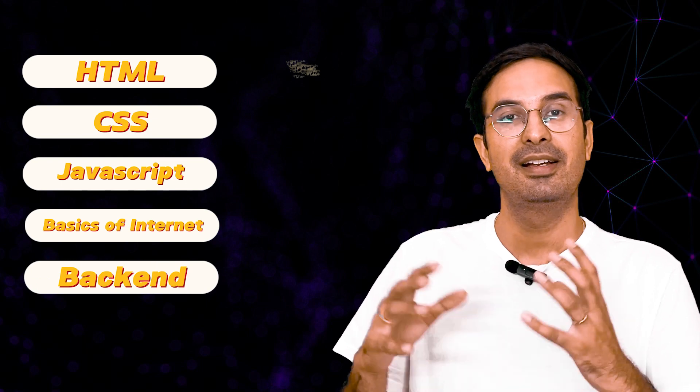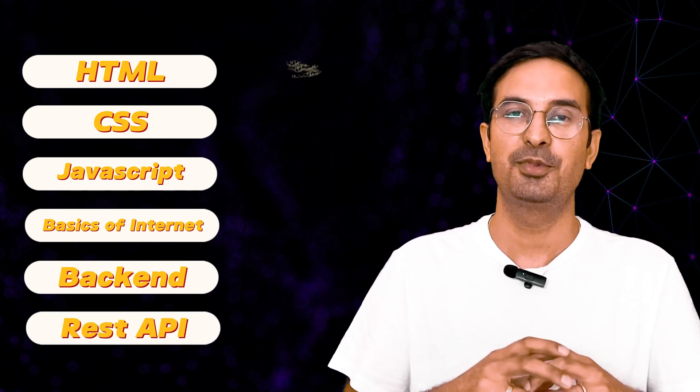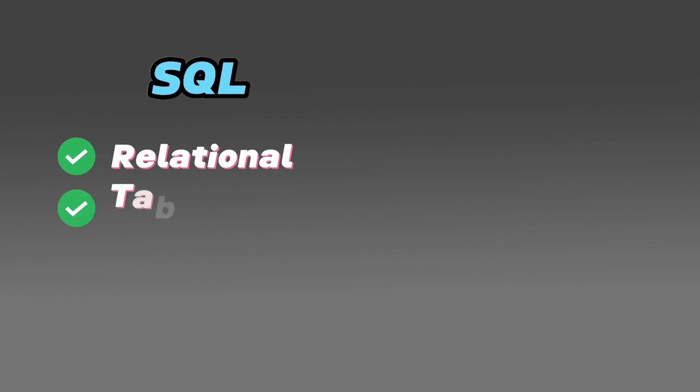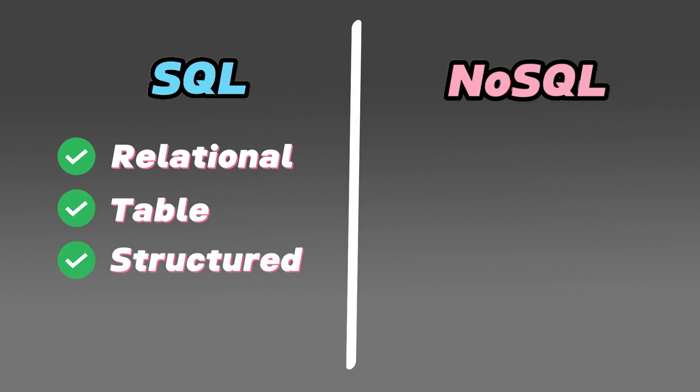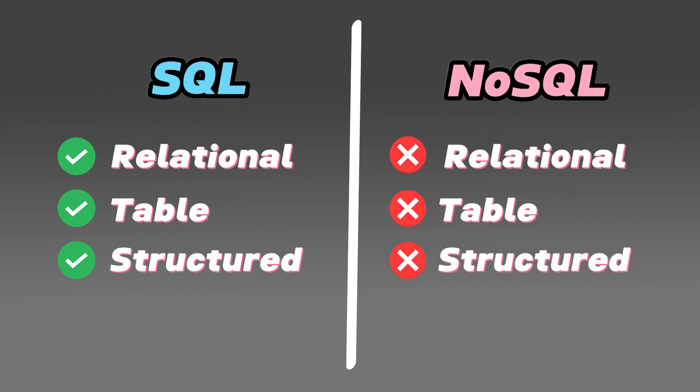So far we've covered HTML, CSS, JavaScript, basics of the internet, backend, and REST APIs — and next comes databases. There are two types of databases: SQL and NoSQL. SQL databases are relational — they store data in tables with a structured format. NoSQL databases, on the other hand, don't use tables; they store data in documents, so there's no fixed structure or predefined columns to define. You can store any kind of data in a NoSQL database.